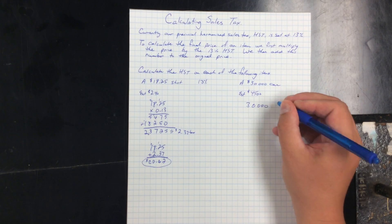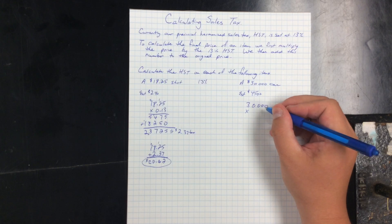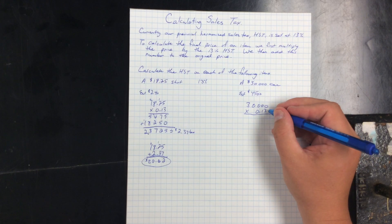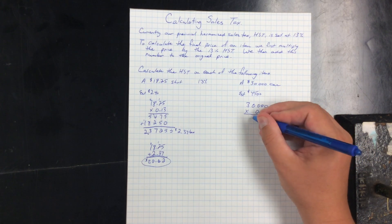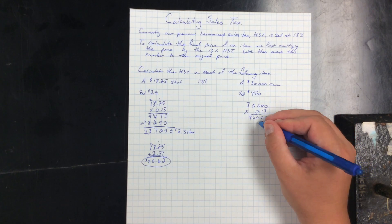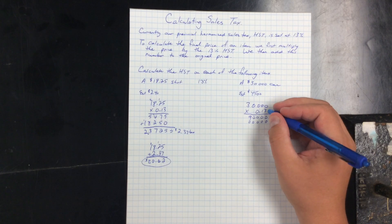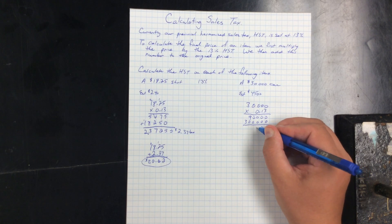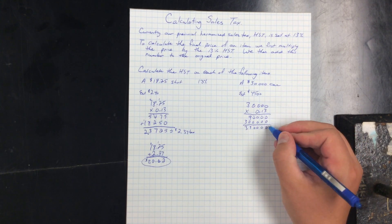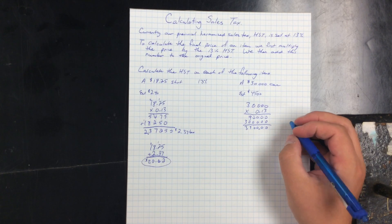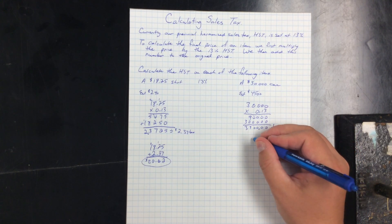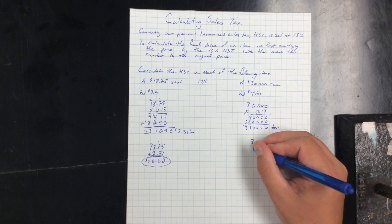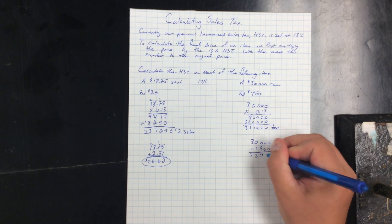Alright, to calculate I'm going to take $30,000 and multiply it by 0.13, which gives us $3,900 in tax. So I'm going to have to add my $3,900 to my original $30,000 to get a final price of $33,900.